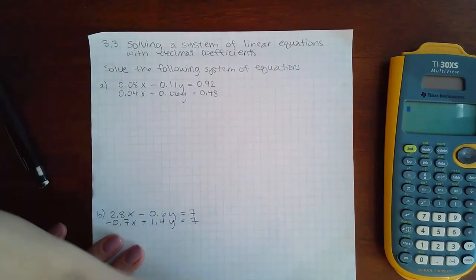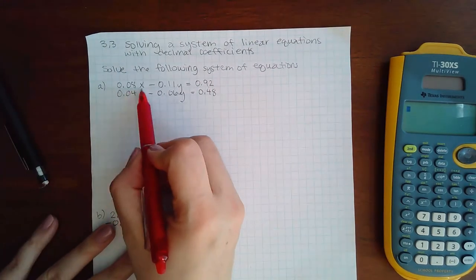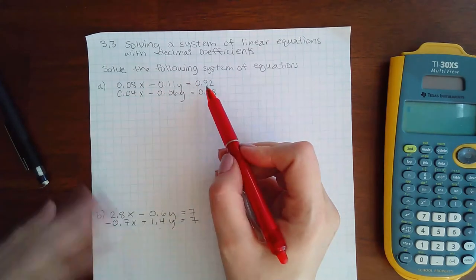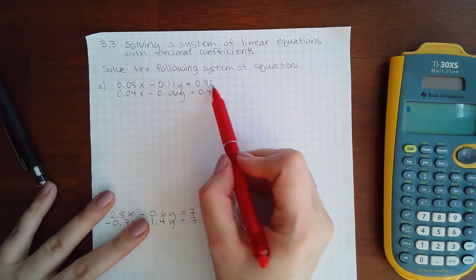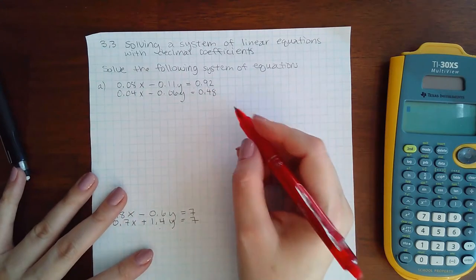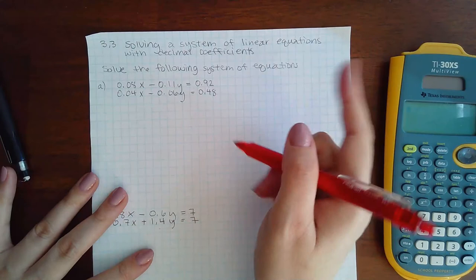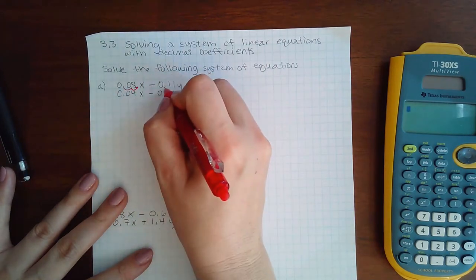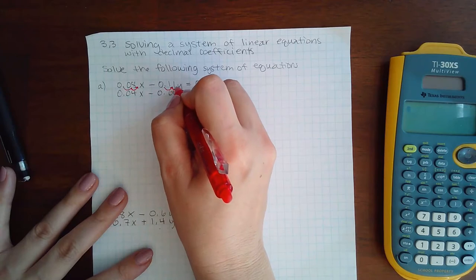So I noticed that this term has two decimal places, this term has two decimal places behind the decimal, this decimal has two decimal places, which means I'm going to have to move the decimal two places for every single term. What you do to one side you have to do to the other. It has to be done to all the terms.